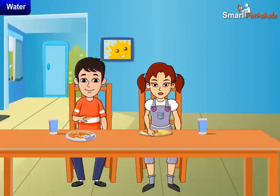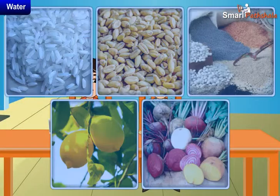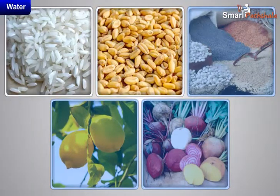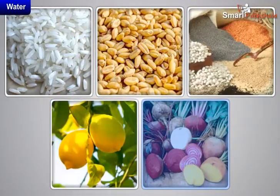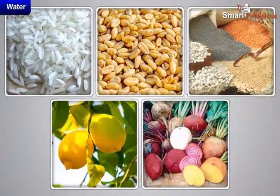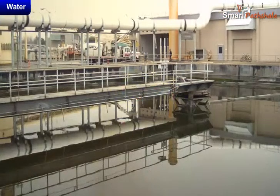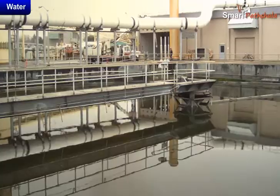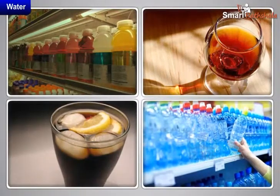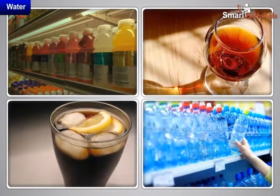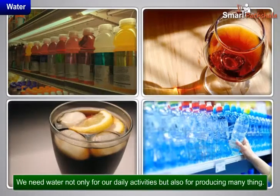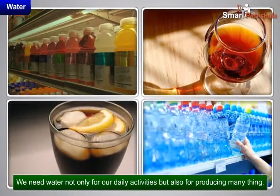The food we eat includes rice, wheat, pulses, fruits, vegetables, etc. We get all these food items from plants and plants require water for their growth. Water is used in industries for producing almost all the things that we use. So, we need water not only for our daily activities but also for producing many things.